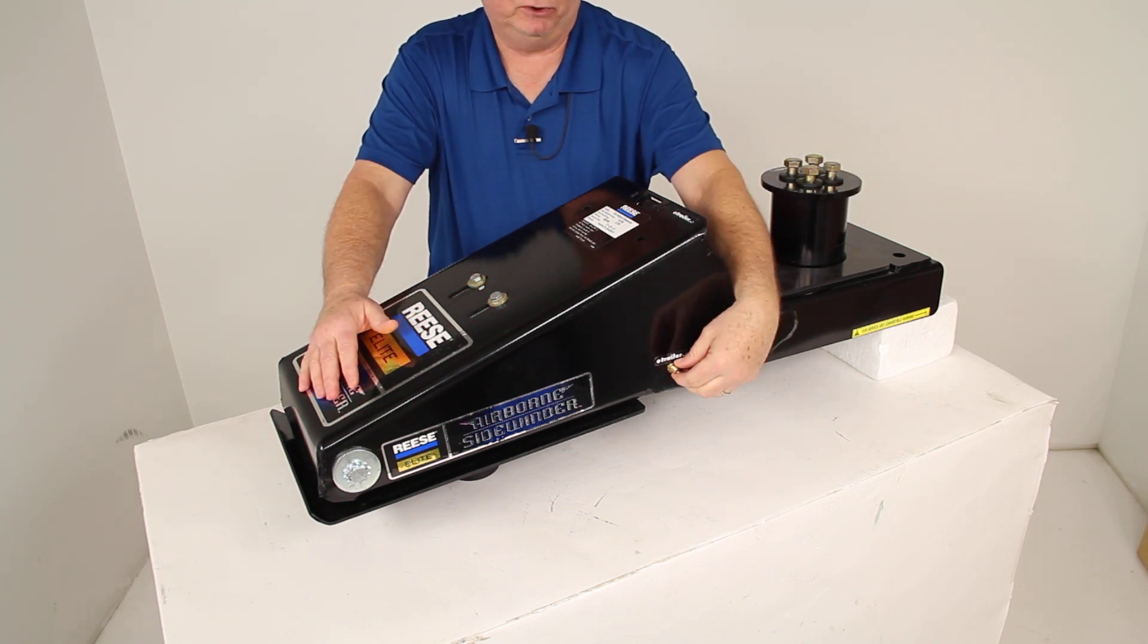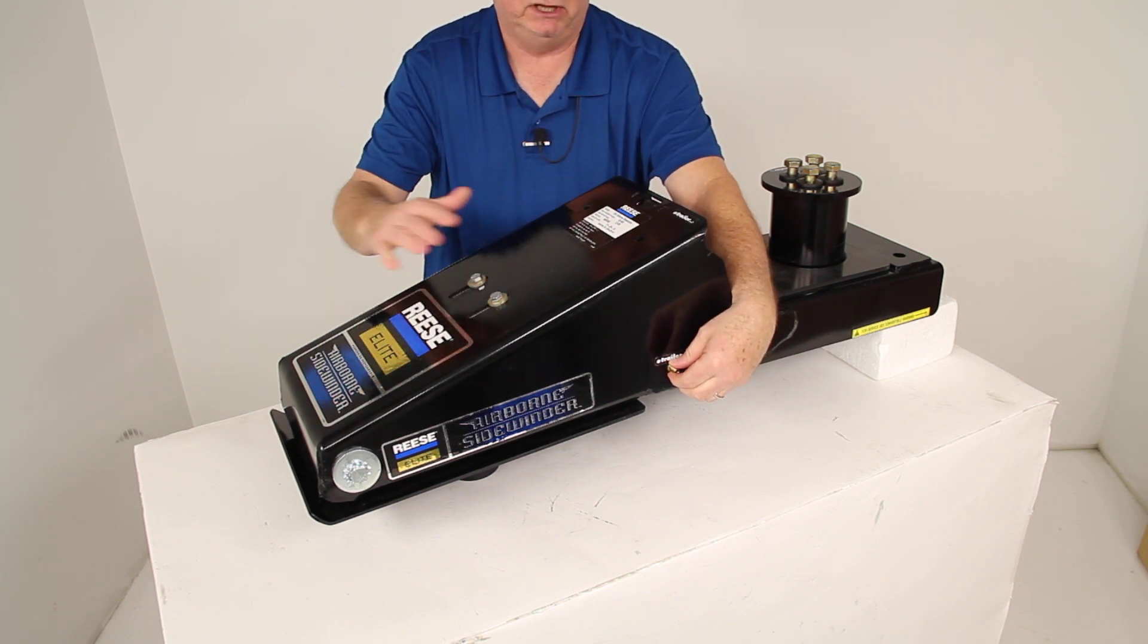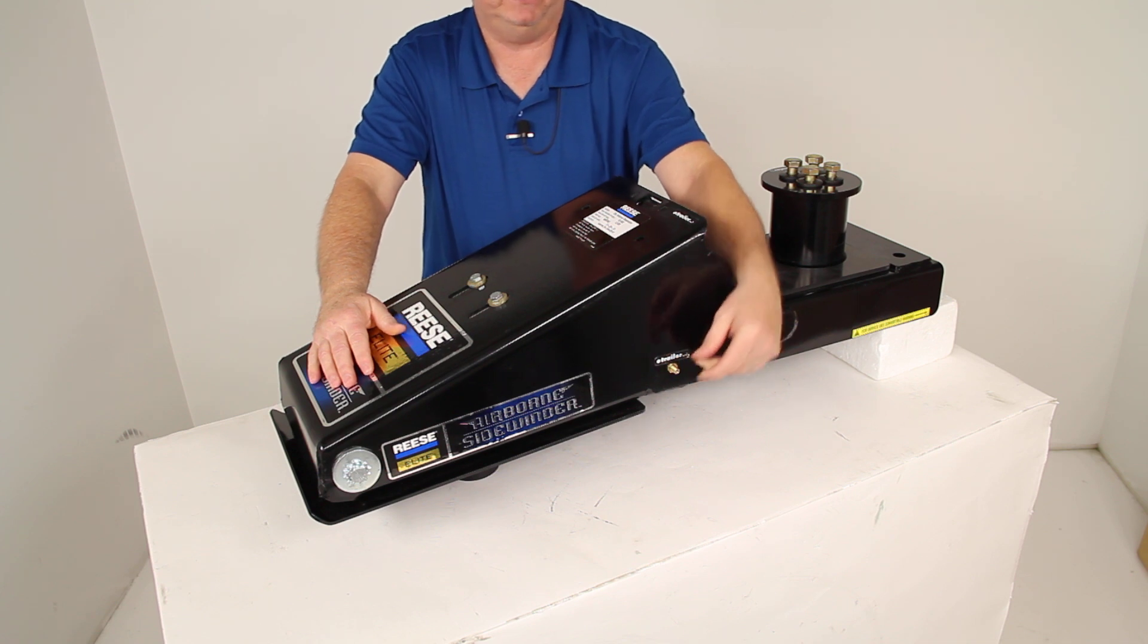One other thing is if you'll notice on the side here there's an air valve. That's where you'll hook the air hose to. That will inflate the air bag in here to get you the correct comfort you need for this air ride.